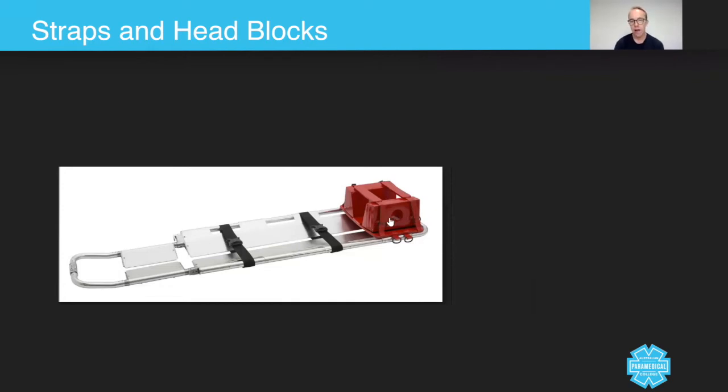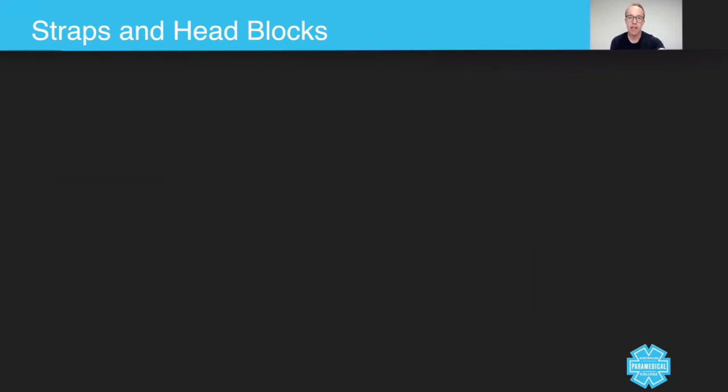Now typically you can see here a set of head blocks, which are used to keep the patient still. Now remembering that if you've assessed the patient as requiring some kind of immobilization, then you need to keep them still somehow. More and more often we're moving away from using head blocks and just using rolled up blankets at the side of the head, just because it's less intrusive. But regardless, you need to strap them down.